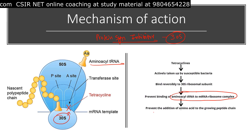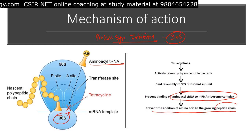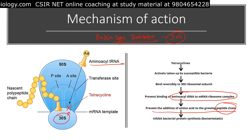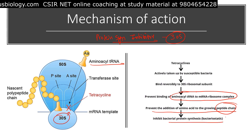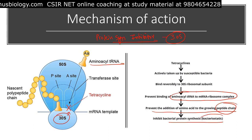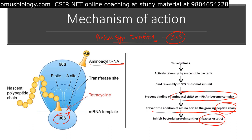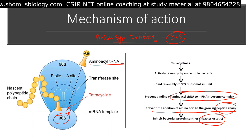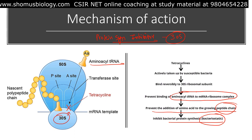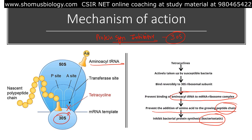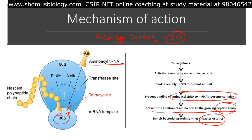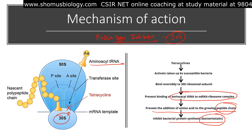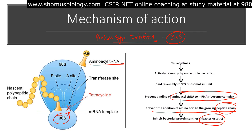As a result, there is prevention of amino acid addition and peptide bond formation, leading to inhibition of bacterial protein synthesis. Tetracycline is considered bacteriostatic in nature, though it can become bactericidal if protein synthesis inhibition is continued at higher concentrations over a longer duration of time.